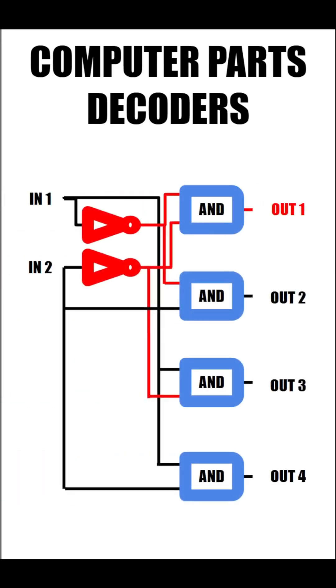When we try and build a 2x4 decoder, we get something that looks like this, with four AND gates aligned to outputs, charged by two inputs set up to NOT gates.